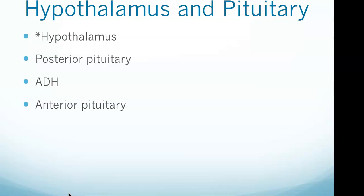The posterior pituitary releases oxytocin and vasopressin. Oxytocin stimulates contraction of the uterus and mammary glands during labor. ADH is made by special nerve cells in the hypothalamus; the nerve cells transport the hormone down axons to the pituitary gland where it is released into the bloodstream. ADH helps control blood pressure by acting on the kidneys and blood vessels, and its most important role is conserving fluid volume by reducing the amount of water passed out in the urine. The anterior pituitary releases direct hormones, which stimulate a response directly at the target tissue, and tropic hormones, which target other endocrine glands.